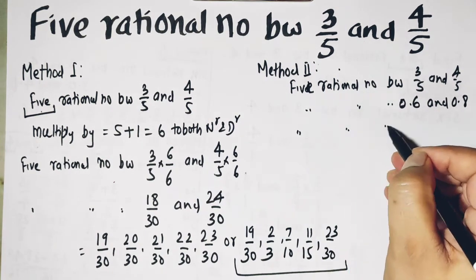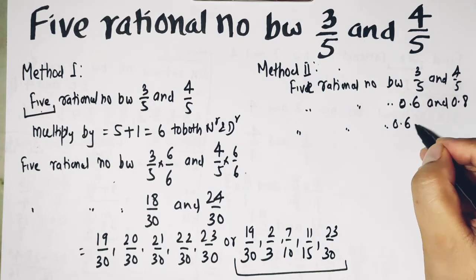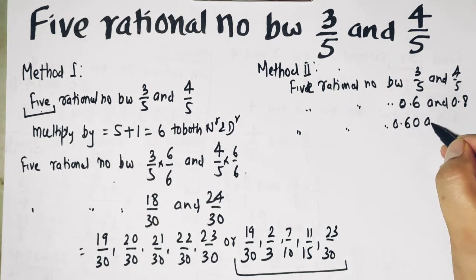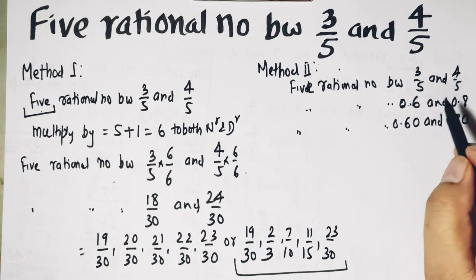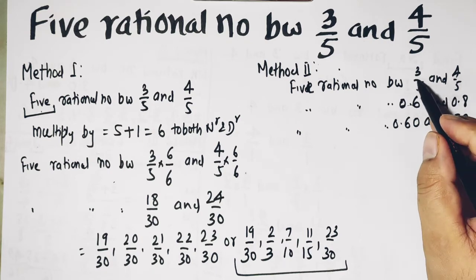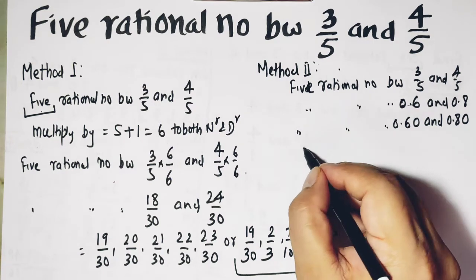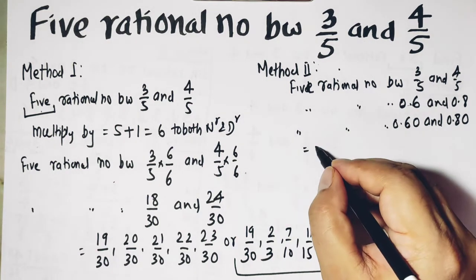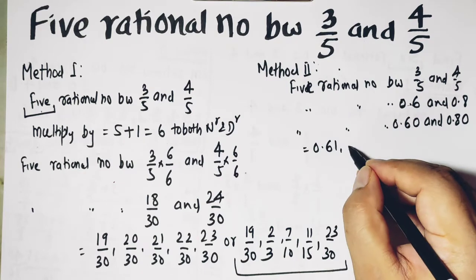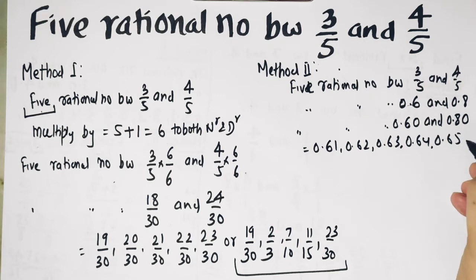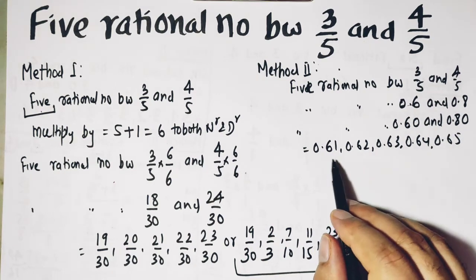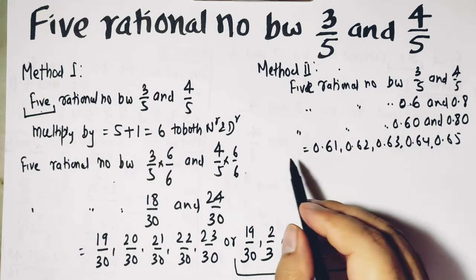And the next step, put one more 0 here. Now keep in mind, this and this are both the same. And again, even if you put a 0 here, it doesn't change. It is still the same. This is actually equal to this. But now we can find so many numbers between these two numbers: 0.61, 0.62, 0.63, 0.64, 0.65, 0.66. There are so many numbers. All these are rational numbers. So this was method 2.